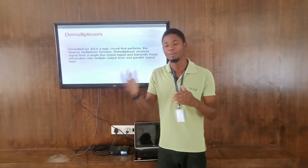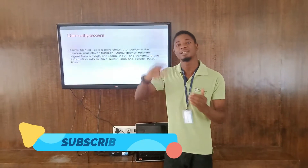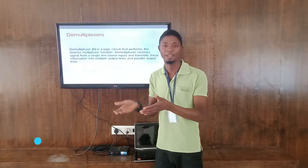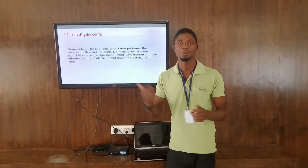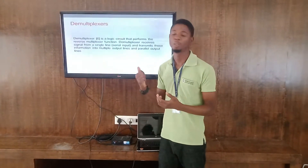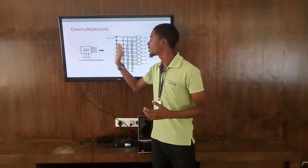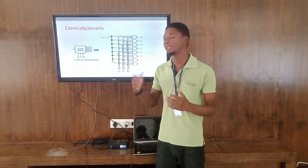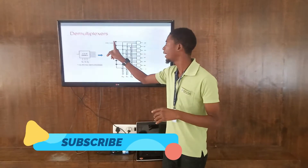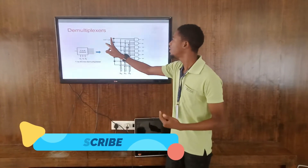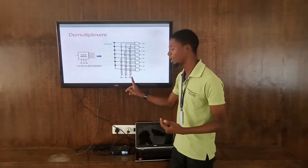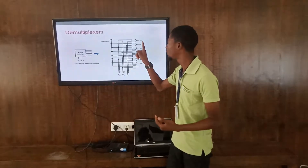Now let's look at demultiplexing. Demultiplexing is the same technology as multiplexing but it does the reverse operation. Whatever multiplexing combines, demultiplexing distributes back. So if we have a message that was converged, we distribute it using demultiplexing. We get one piece of information coming from one source as the input line, coming from the multiplexer, and then the distribution begins. The selection lines — three of them — will decide which information is sent to which subscriber.